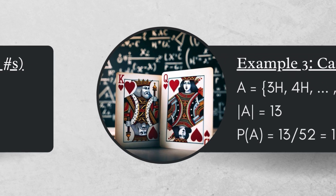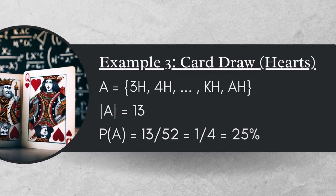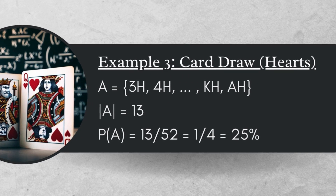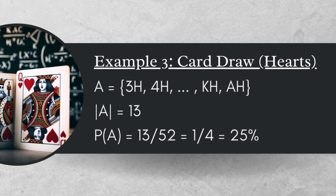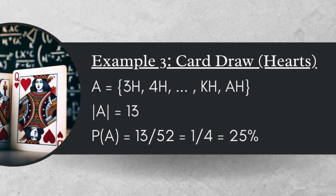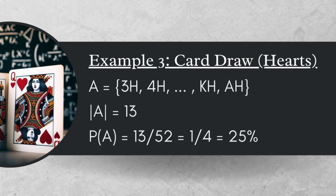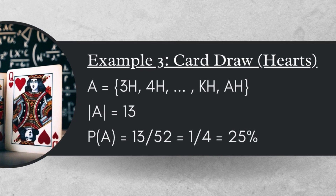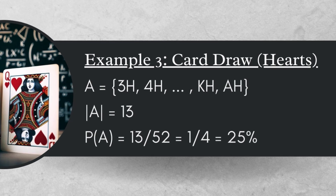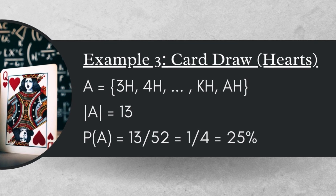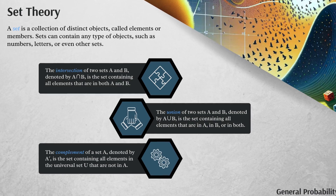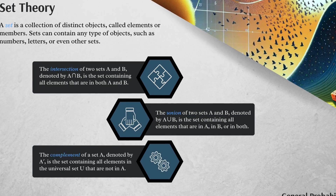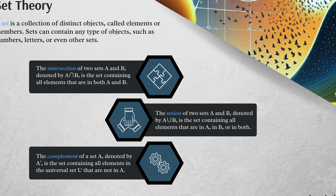In the final example, we define A as the set of all heart cards when drawn from a 52-card deck. The cardinality of A is 13, the cardinality of the sample space is 52, so the probability of A, or the probability of drawing a heart, is 13 over 52, or 25%. Building on sample spaces, events, and probabilities, we can now talk about intersections, unions, and complements.